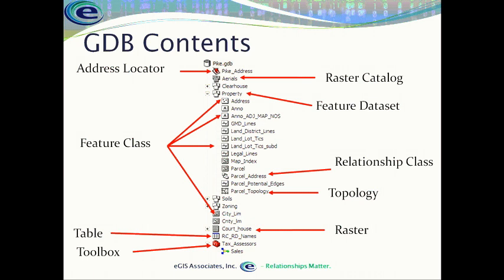We also have topology — for example, the parcel topology — which is part of the spatial validation capability. We can create a topology in the geodatabase that applies a set of rules to feature classes, such as parcel polygons cannot overlap, must not have gaps, or each parcel polygon must be bounded by a feature in the parcel edges feature class. By applying these rules and validating against them, we know where any errors exist, making our analysis more reliable. This is a powerful tool not available with shapefiles, coverages, or AutoCAD drawings — it can only be done inside the geodatabase.